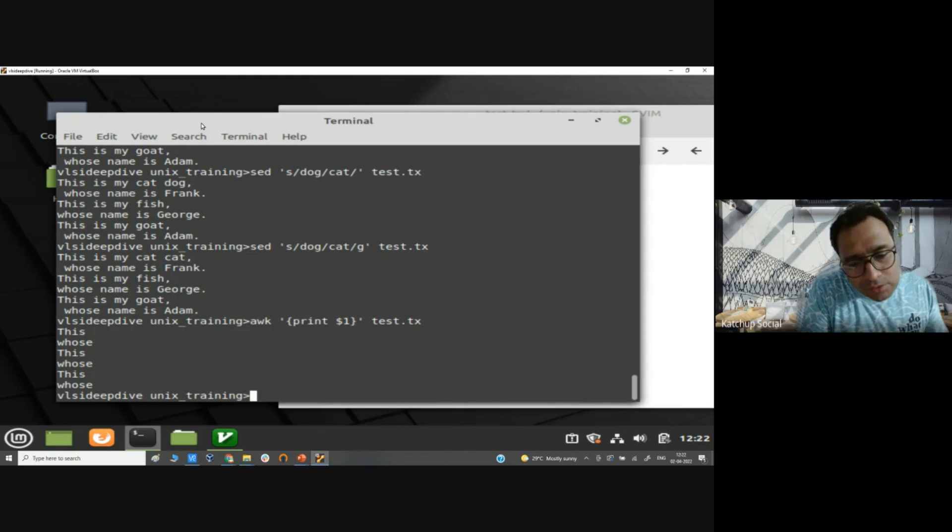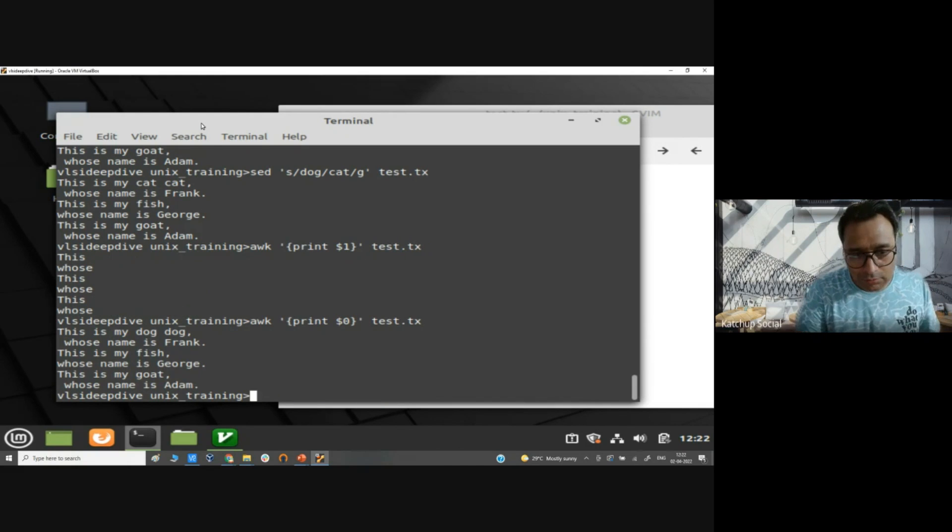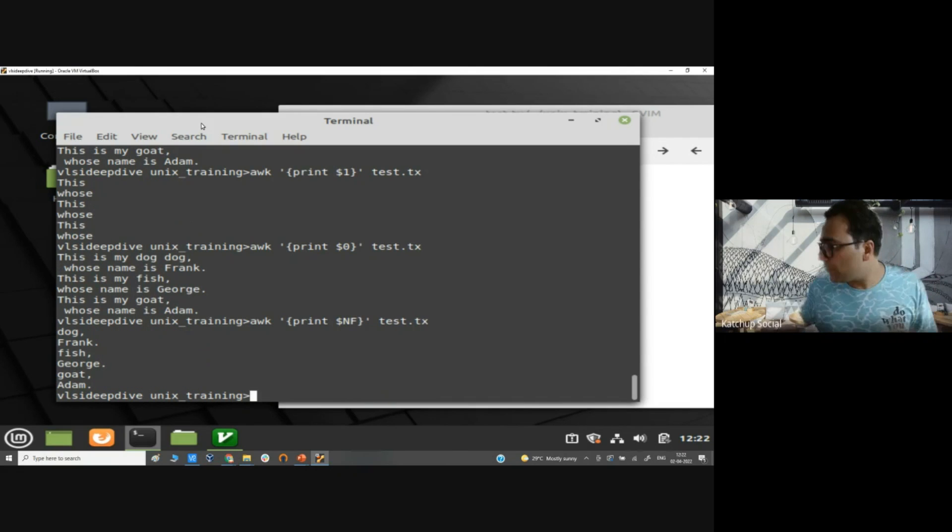I can use $0, that means complete line will be printed out. $NF means last column and last column will be printed out.